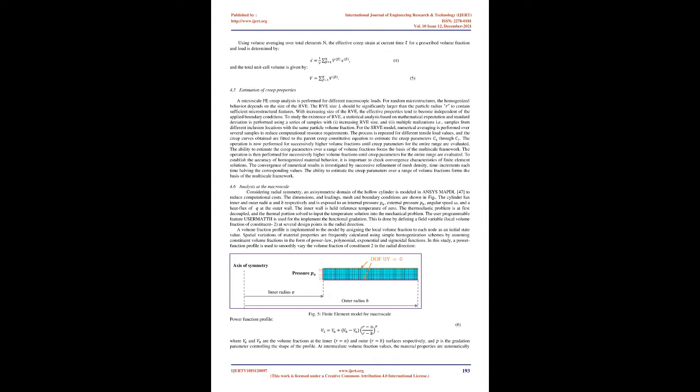Computation of creep properties at the micro scale in terms of constituent volume fractions is the first step in understanding the macroscopic response. The method allows generation of ideal microstructures of either periodic (regularly arranged) or random materials accounting for particle interactions, to be used for homogenization. Three different models have been used at the micro level: (1) 2D single inclusion unit cell, (2) 3D single inclusion unit cell, and (3) 3D SRVE. Each model employs FEM to compute creep properties for different local compositions to generate a material model. To automate the entire procedure, the models are prepared using scripts developed in MATLAB.